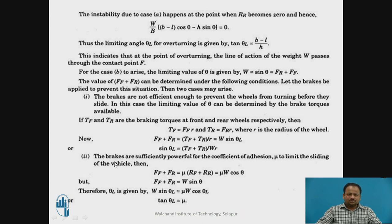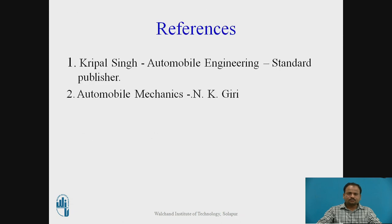The second condition is that the brakes are sufficiently powerful, with the coefficient of friction mu limiting the sliding of the vehicle. Then FF plus FR equals mu times (RF plus RR). Since RF plus RR equals W, and since FF plus FR equals W sin theta, equating both gives W sin(theta_L) equals mu times W cos(theta_L). Therefore, tan(theta_L) equals mu. This limiting value depends entirely on the coefficient of friction between the road and the wheel. These are the references. Thank you.